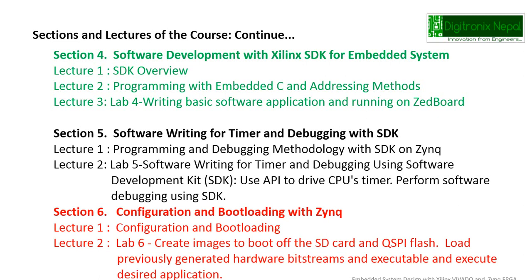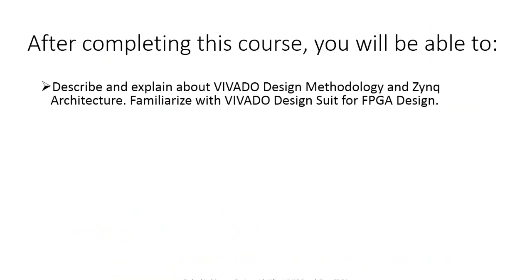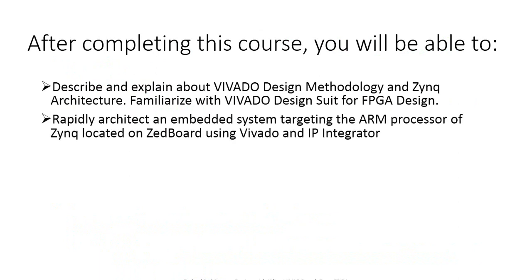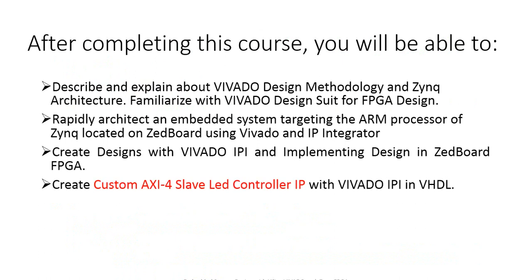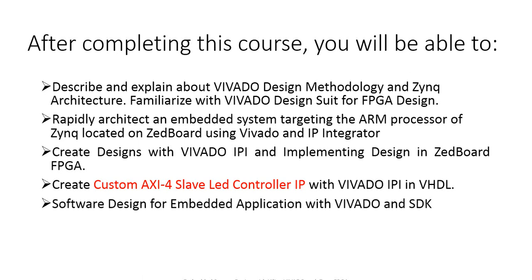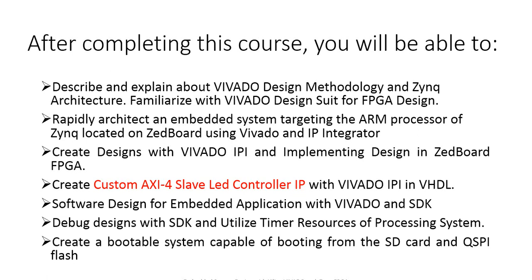In section six, we have configuration and boot loading with Zynq — we are going to create a bootable file target for SDK and QSPI flash from our application project. After completing this course, you will be able to describe and explain Vivado design methodology and Zynq-7000 architecture, rapidly develop image design applications targeting the ARM processor of Zynq, design Vivado AXI-based applications, create a custom AXI slave control IP in VHDL, utilize software and debugging features of SDK, utilize timer resources of the processing system, and create a bootable system capable of booting from SD card and QSPI flash.